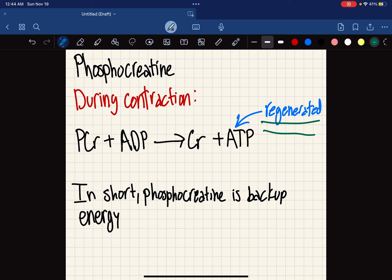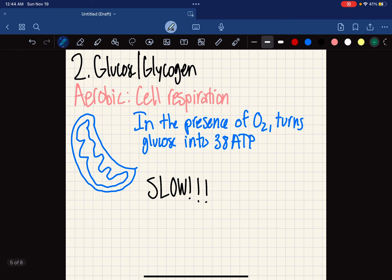Our second source of energy is glucose and glycogen, and there's two specific processes. The first one is aerobic, which is just cell respiration. In the presence of oxygen, it turns glucose into 30 ATP. This happens in the mitochondria, the powerhouse of the cell. It's a very slow process.